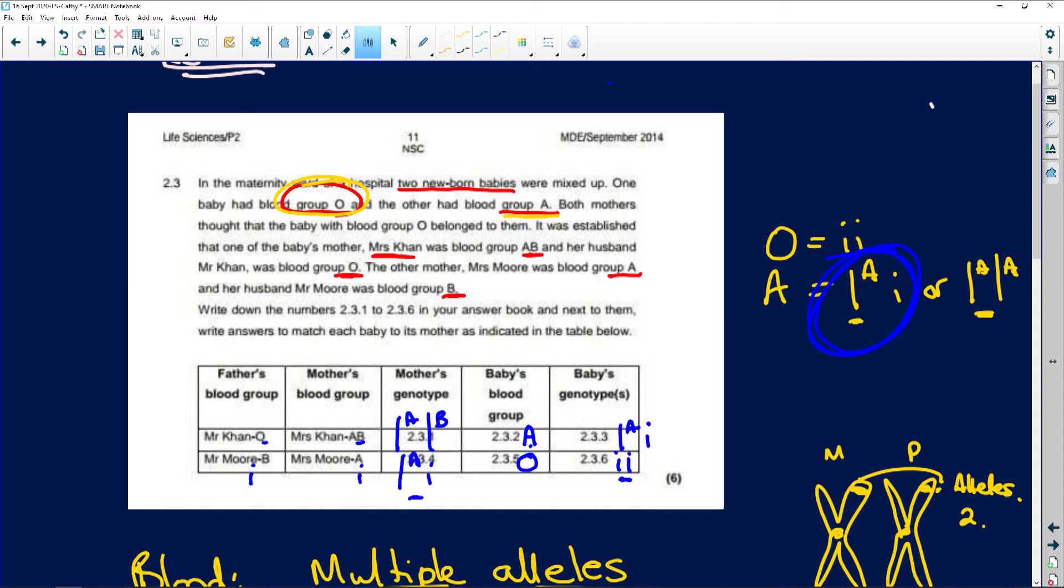So all you have to do, people, is remember that you need two recessive alleles to express the recessive trait. Whenever you have a complete or incomplete dominance, what happens? You're going to have the dominant allele masking the recessive allele. But in blood, that's not the case. Why? Because there are multiple alleles.